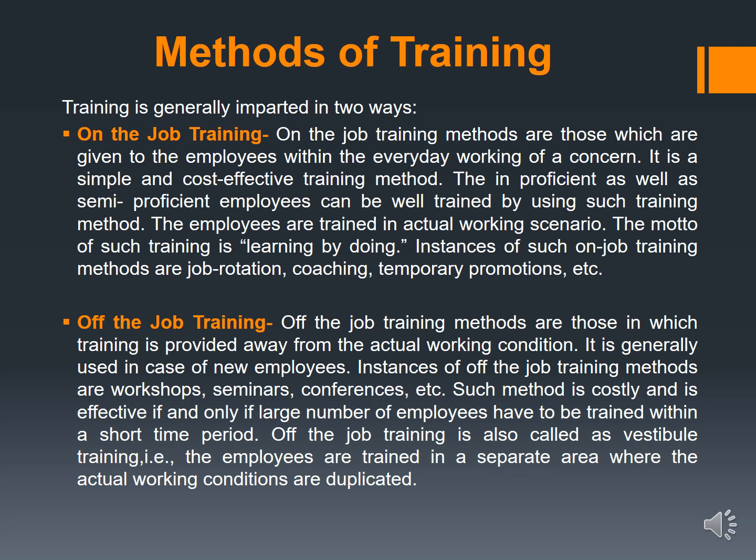There are generally two types of training: on-the-job training and off-the-job training. On-the-job training methods are those in which employees are trained every day while working for the organization. It is a simple and cost-effective method, where employees are trained in actual working conditions — the motto being learning by doing. Off-the-job training is given away from actual working conditions, usually to new employees, where duplicate working conditions are created.